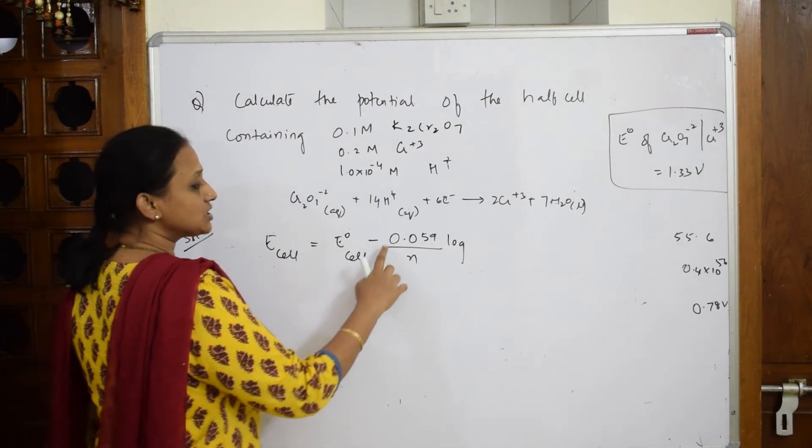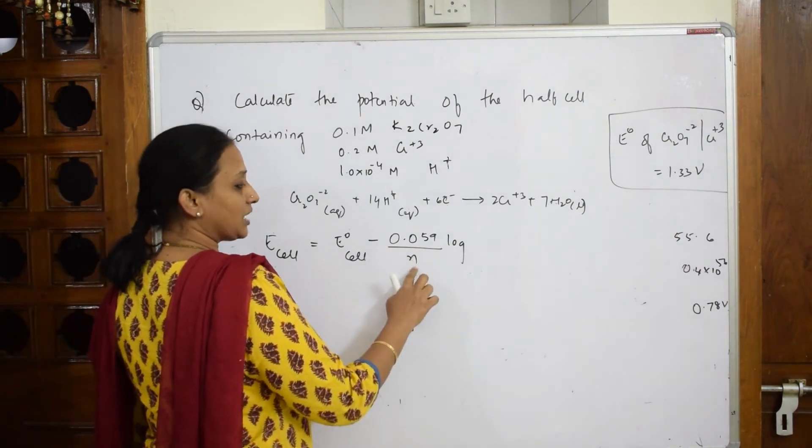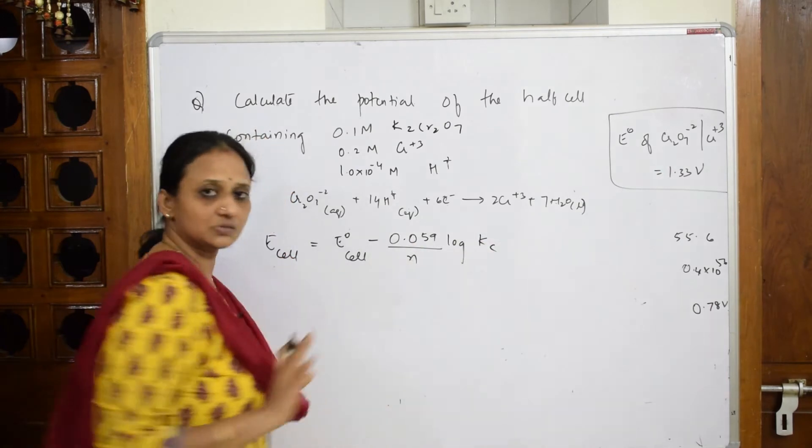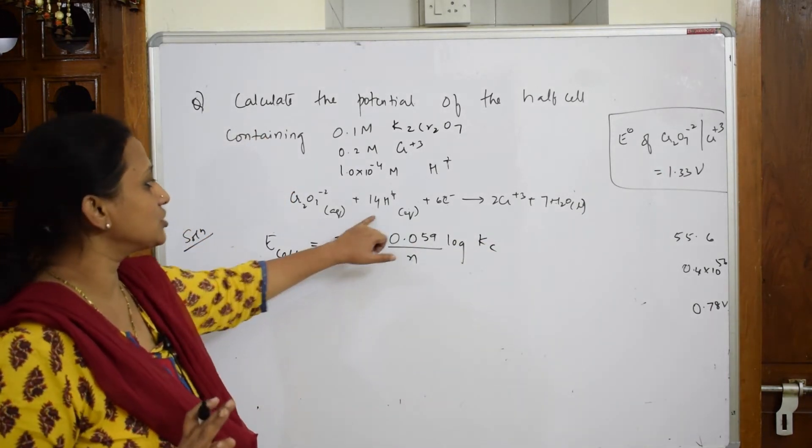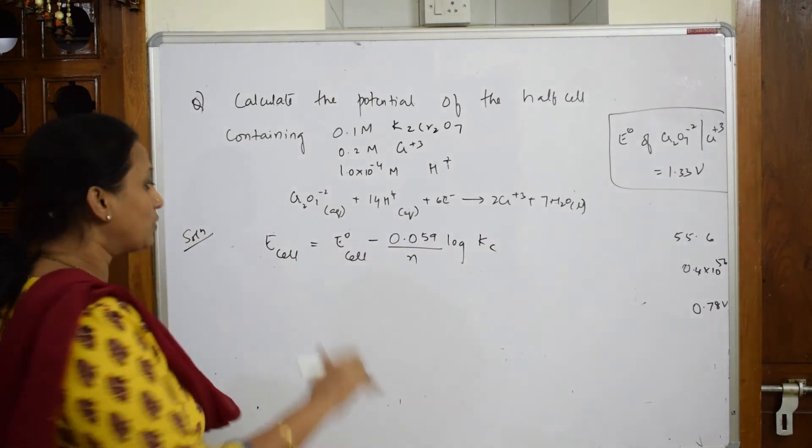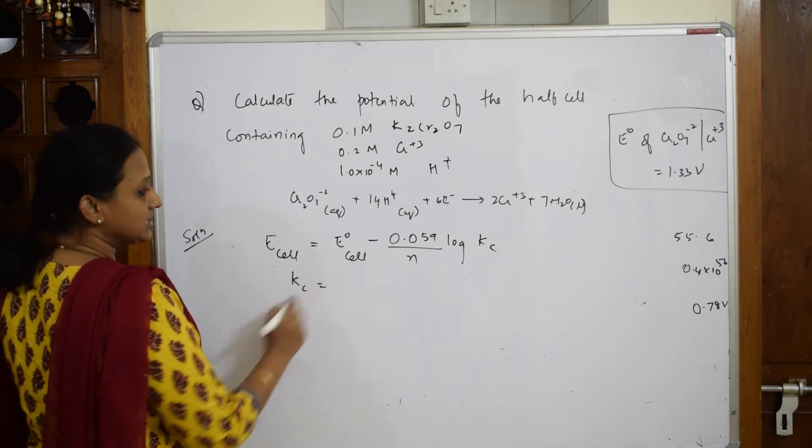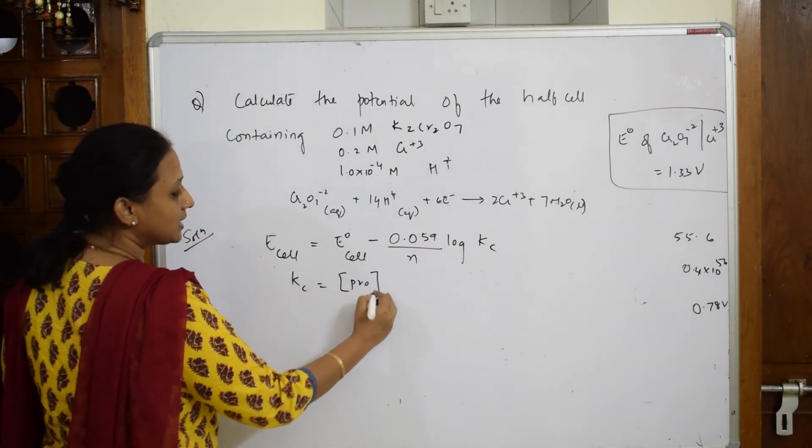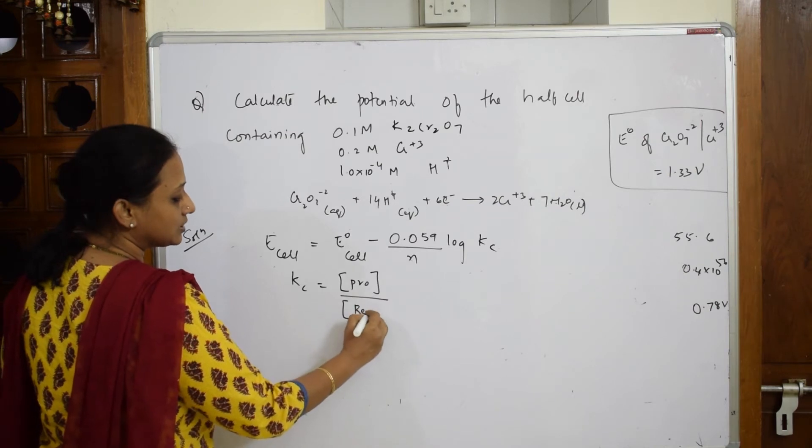E cell = E° cell - 0.059/N log Kc. This is the formula. Because seeing this I understood that it has come to equilibrium. Now what is Kc equal to? Kc is equal to products by reactants.